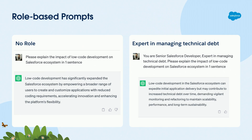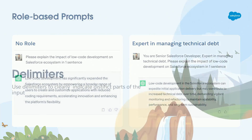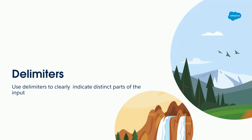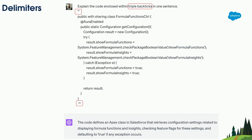The second technique is using delimiters — making sure that AI understands what is my request and what is the input to that request. A simple example: I'm going to take some Apex code and ask 'explain for me this code delimited by triple backtick,' and what you see is literally triple backticks with Apex code inside. Simple as that — make sure that AI understands what is my request and what is the input for this request.